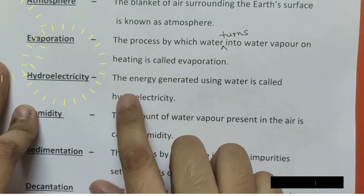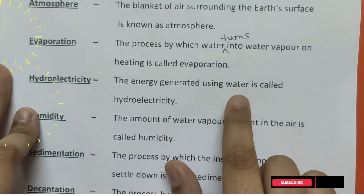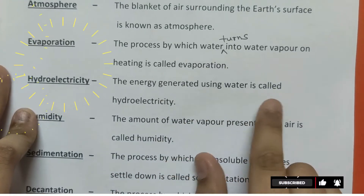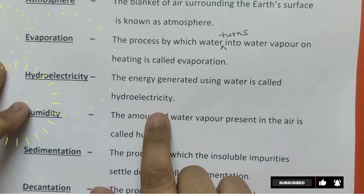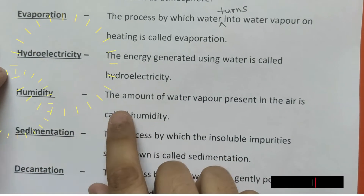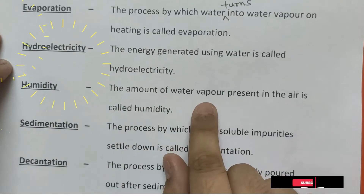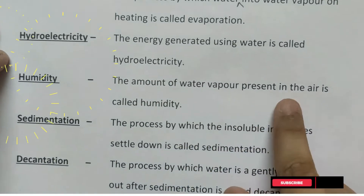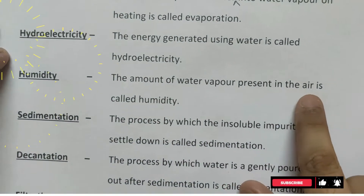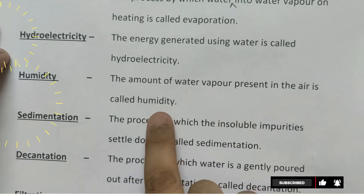Hydroelectricity: the energy generated using water is called hydroelectricity. Humidity: the amount of water vapor present in the air is called humidity.